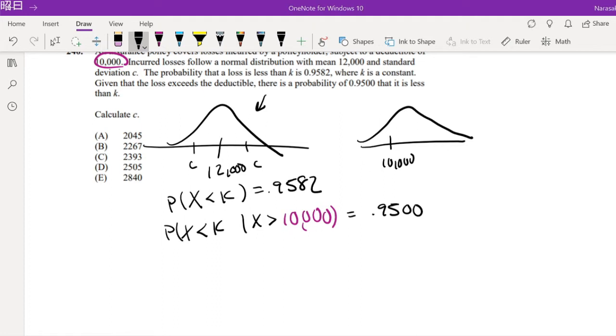Instead of finding, let's say K is like right here, instead of finding where X is less than K like this, we're trying to find when it's from our deductible to our K, wherever K may be. So we're trying to find this in-between space.